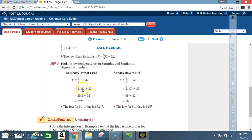So now we have F equals 9 over 5 times 14 plus 32. 9 over 5 times 14 is 25.2 plus 32. 25.2 plus 32 is 57.2. So the low for Saturday's temperature is 57.2 degrees Fahrenheit.